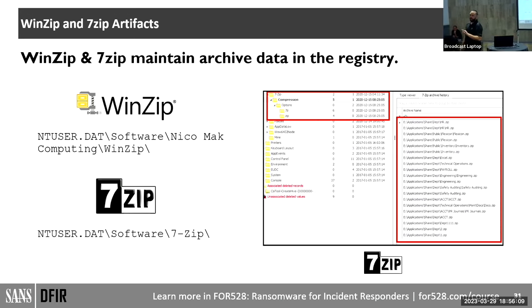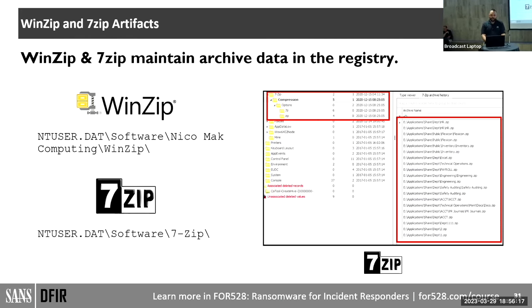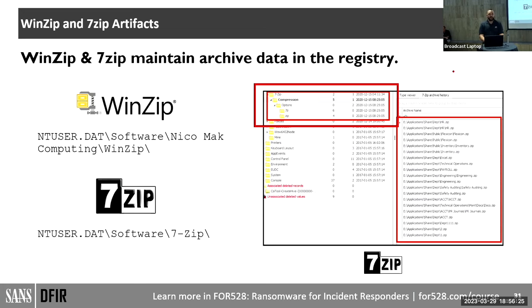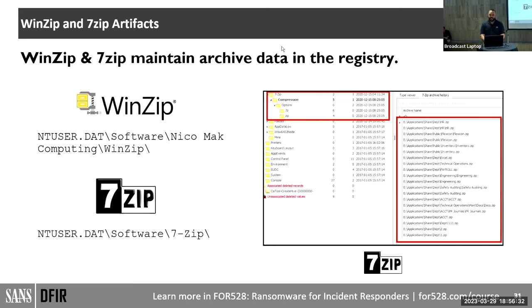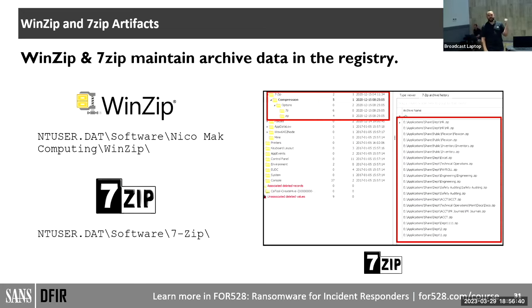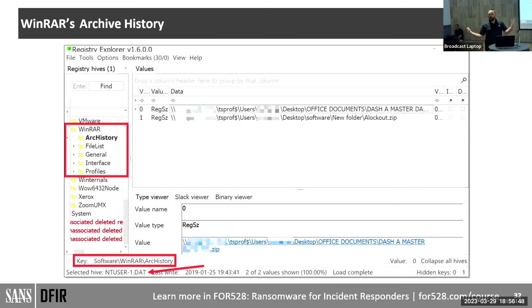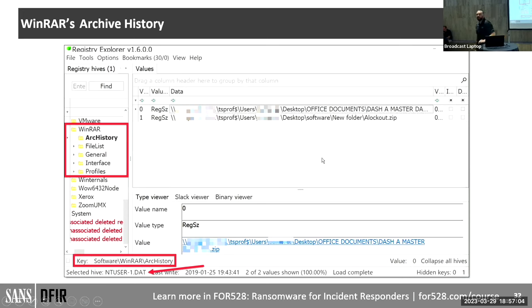If threat actors use WinZip or 7-Zip, it can be useful for you — both tools have registry locations that sometimes keep an archive history. This shows the names of archives that were created. Note: there is a command-line version of 7-Zip called 7za.exe. If they use that version, the registry doesn't get updated — so be aware. WinRAR also has a registry key at NTUSER.DAT\Software\WinRAR\ArcHistory — check those locations because they can be extremely useful.